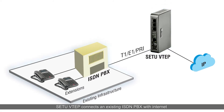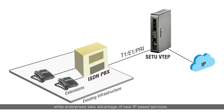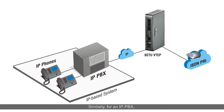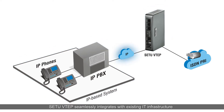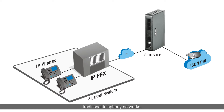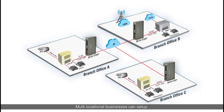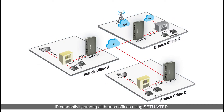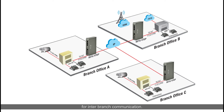Setu VTAP connects an existing ISDN PBX with the internet to provide IP connectivity. It allows legacy PBX to remain in service while enterprises take advantage of new IP-based services. Similarly, for an IP PBX, Setu VTAP seamlessly integrates with existing IT infrastructure and provides T1E1 PRI trunking for connectivity with traditional telephony networks. Multi-locational businesses can set up IP connectivity among all branch offices using Setu VTAP, which proves to be a cost-effective solution for inter-branch communication.